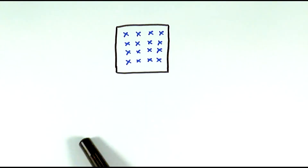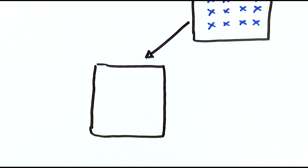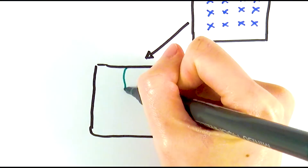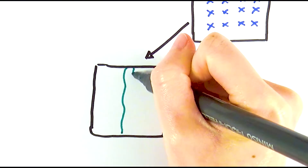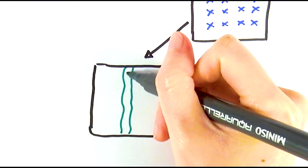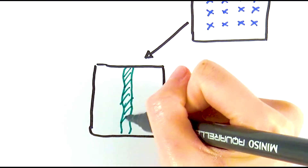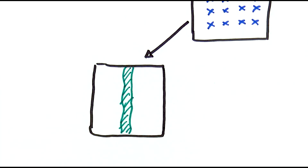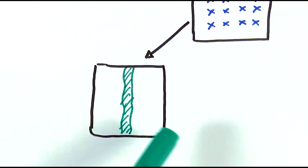That is exactly the case in the first type of speciation. In the first situation, something might have happened that created a physical barrier within that population or habitat. For example, it could have been a hill, a river, earthquakes, or tectonic plate movements that separated the land into two bits, like into two islands. The concept is that a physical barrier has appeared and separated the population into two different areas.